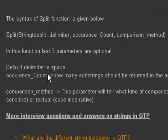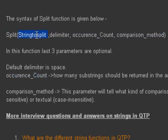Now the syntax of the split function is given here: string to split, delimiter, occurrence count, and comparison method. The first parameter is the string to split — that is very obvious. The delimiter is the character by which we want to split the string, and the occurrence count specifies how many substrings should be returned in the array.